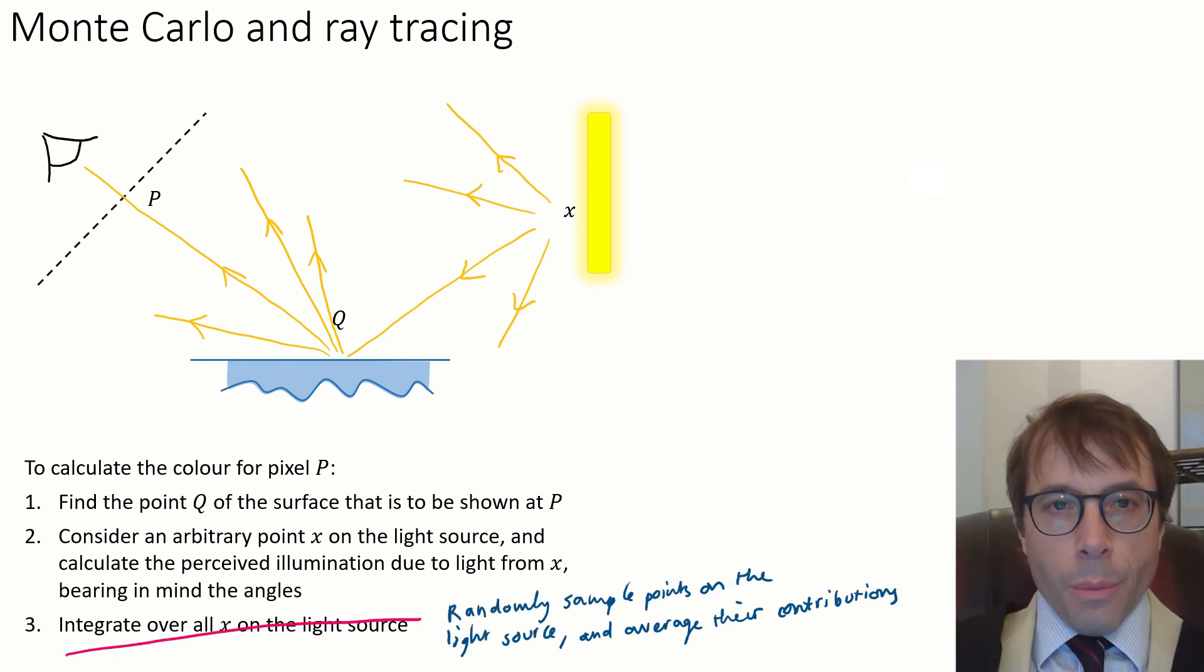Now the Monte Carlo idea is simply whenever you see an integral, replace it by a random sample. In other words, we'll randomly sample points on the light source and average their contributions. The more samples we take, the better the approximation will get.